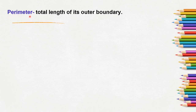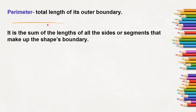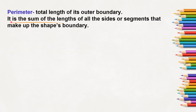And what is perimeter? Perimeter is the total length of its outer boundary. It is the sum of the length of the sides or segments that make up the shape's boundary. Perimeter is nothing but the length of its boundary.